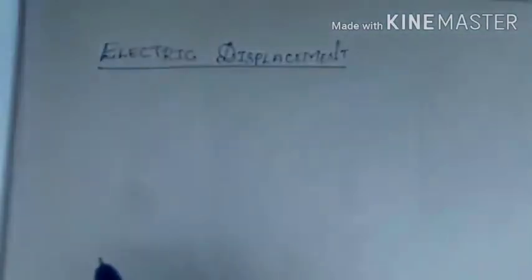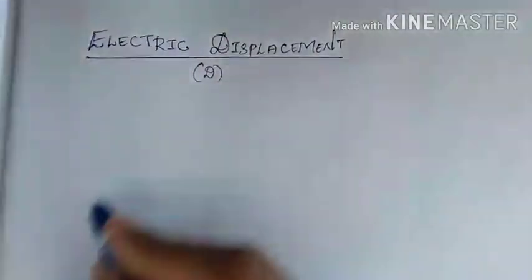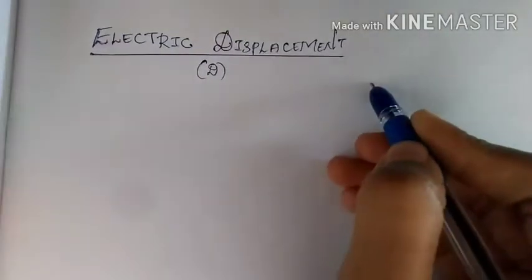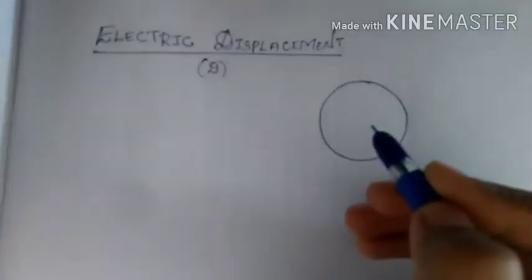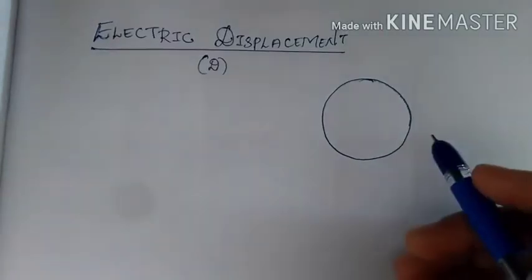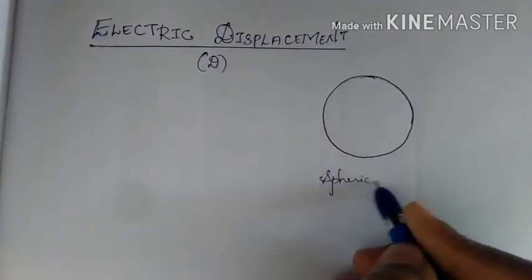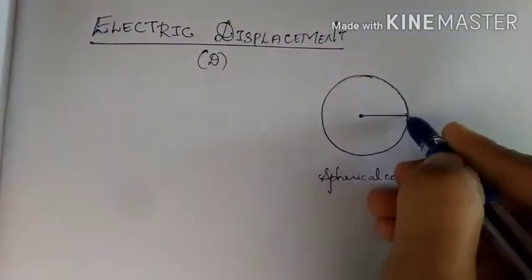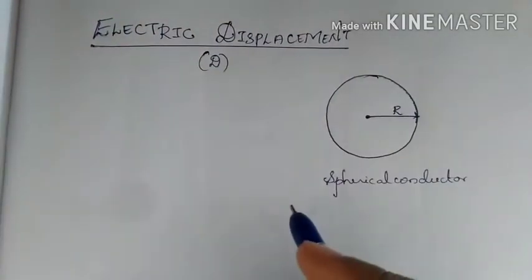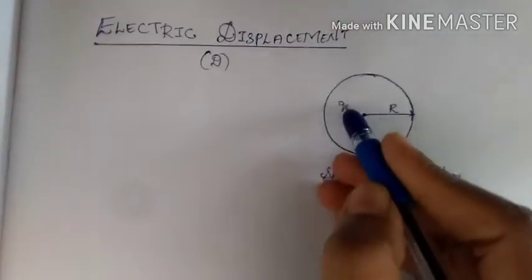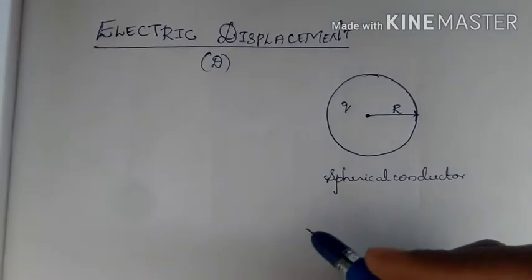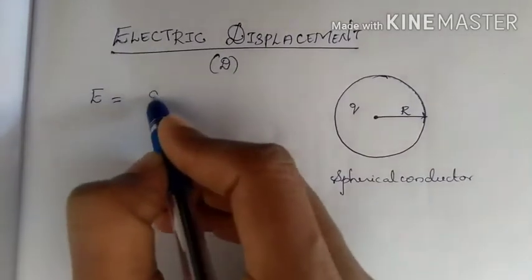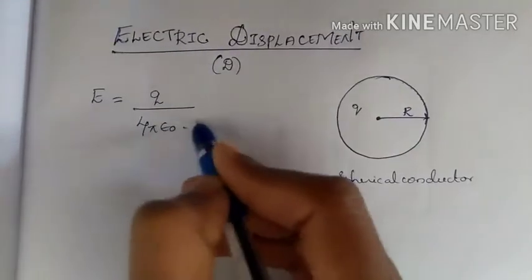Electric displacement is denoted by D. To understand this, consider a charged spherical conductor of radius R, which encloses charge Q. The electric field at any point on the surface is given by E equals Q divided by 4π epsilon naught R squared.